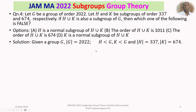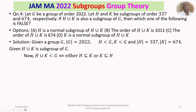We have a group G of order 2022. H is a subgroup of G, K is a subgroup of G, with order of H equal to 337 and order of K equal to 674. We are given H union K is a subgroup of G. When H union K is a subgroup, we have a necessary and sufficient condition: H union K is a subgroup of G if and only if either H is a subgroup of K or K is a subgroup of H.